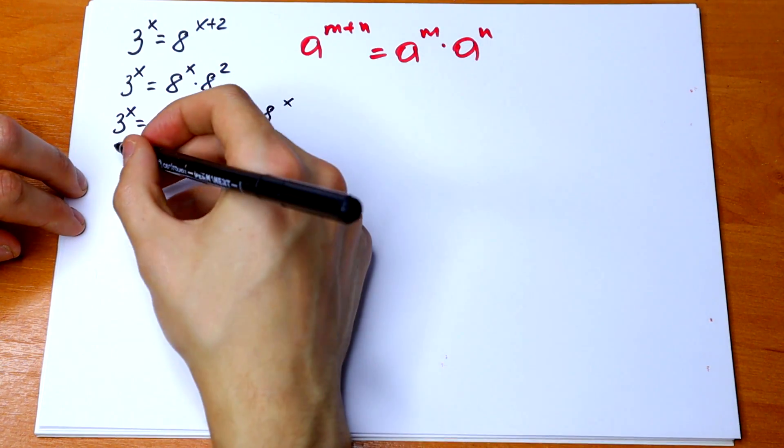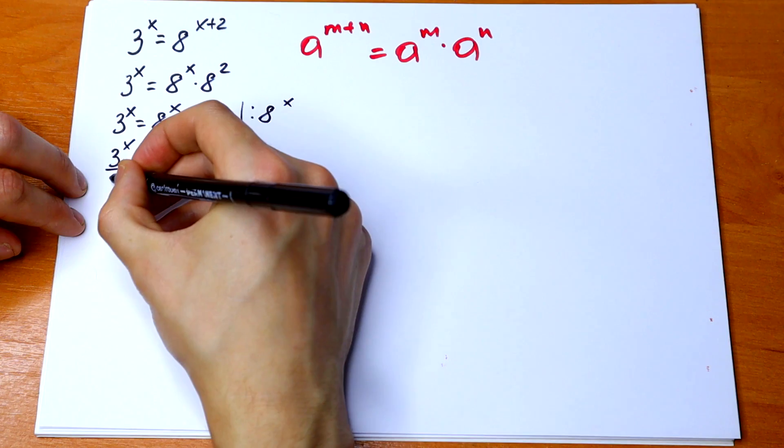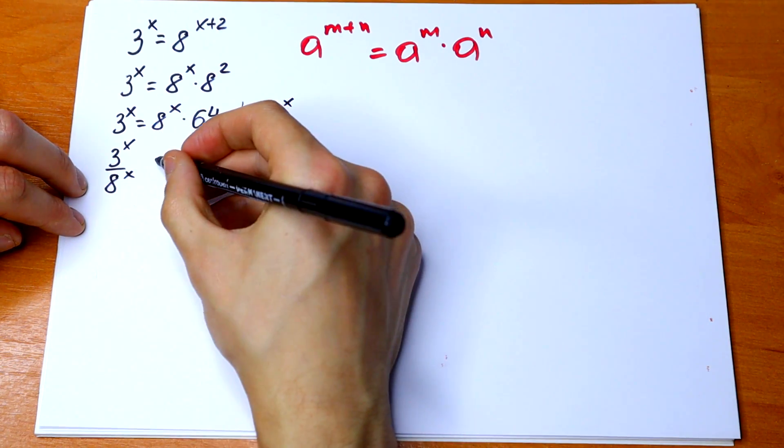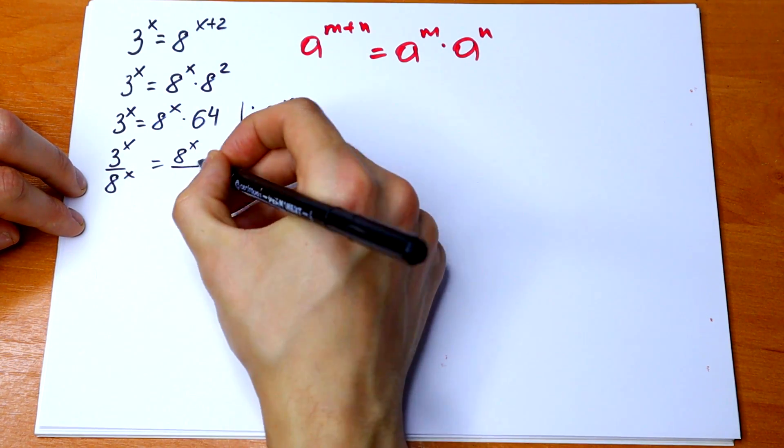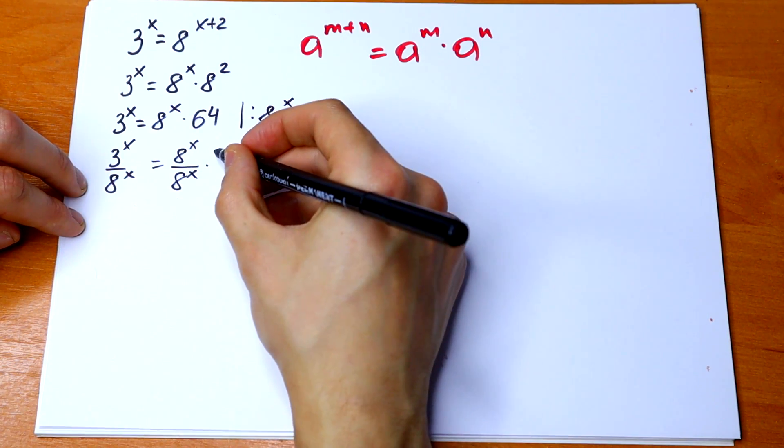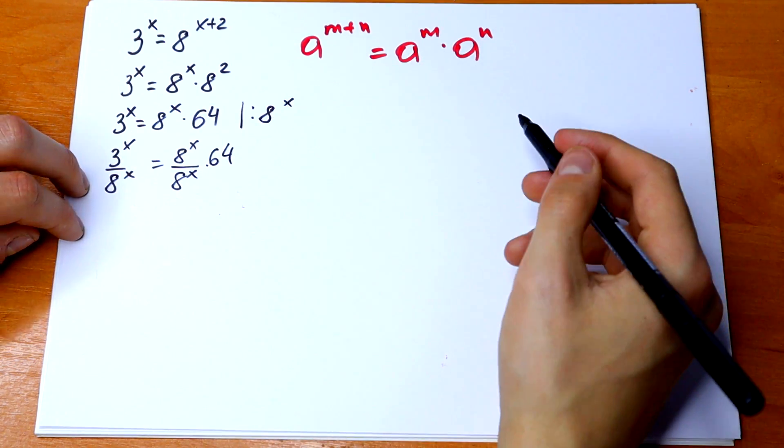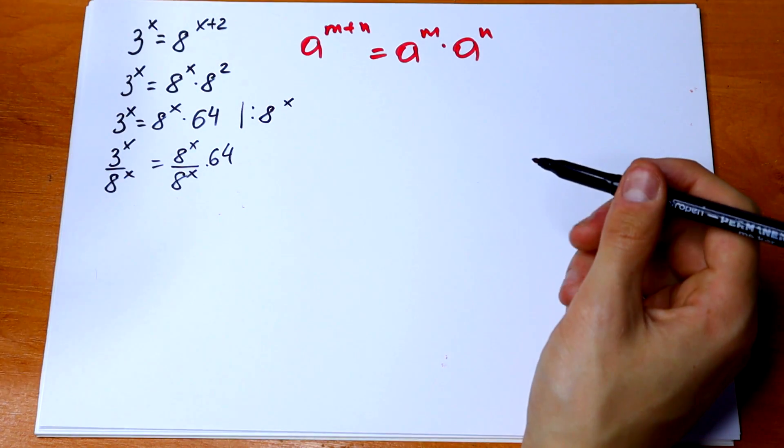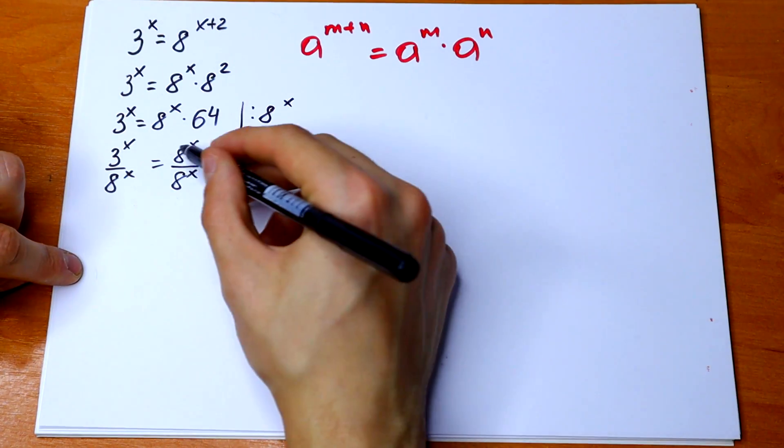So I will have on the left 3 to the power x over 8 to the power x equals 8 to the power x over 8 to the power x times 64. I write this in that way. So for sure we can cancel it. It will be 1.